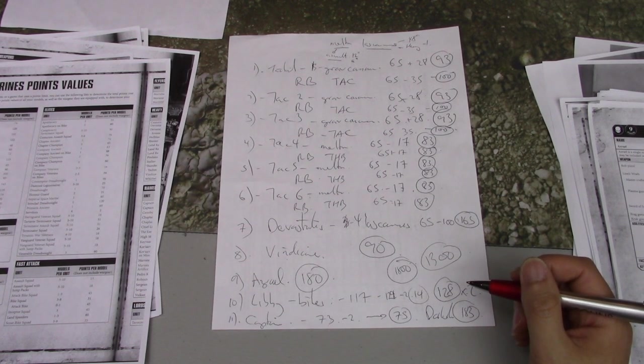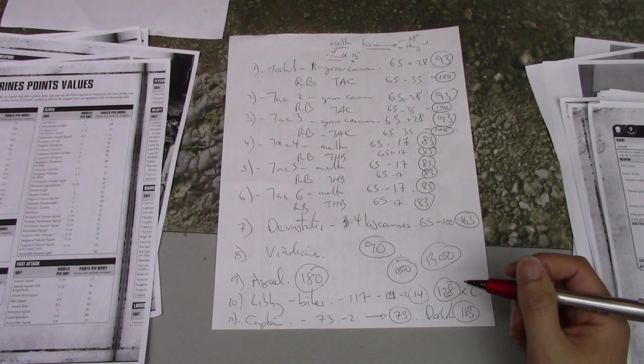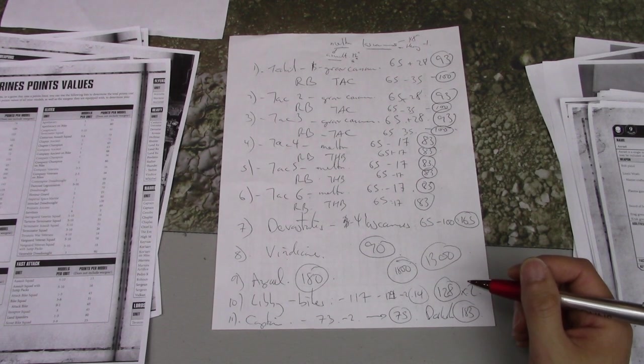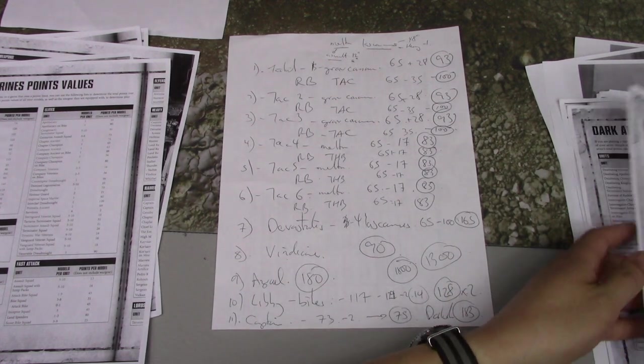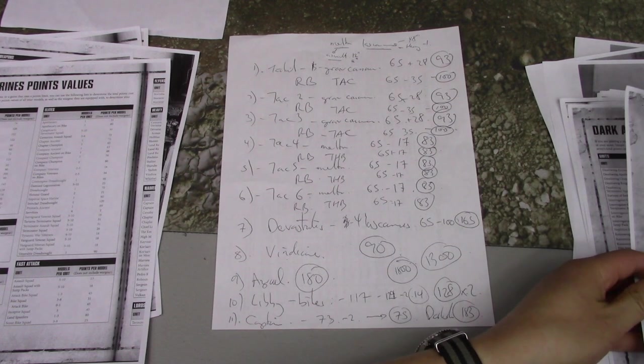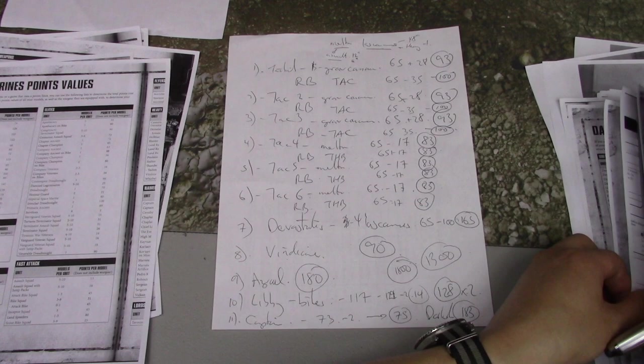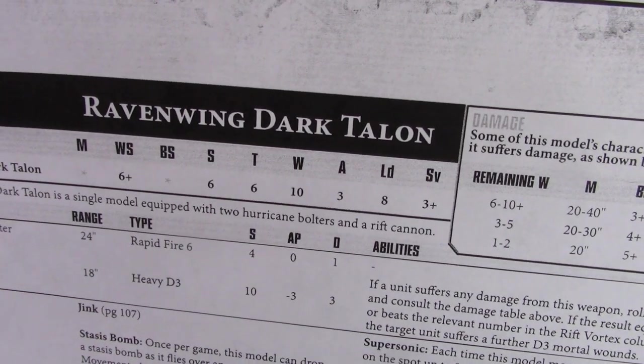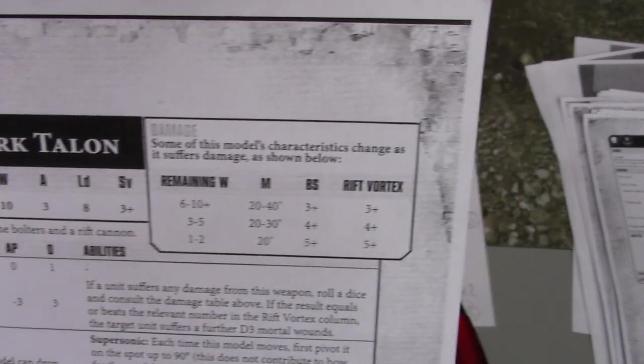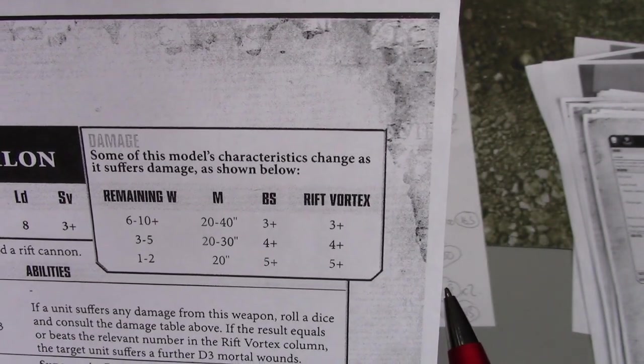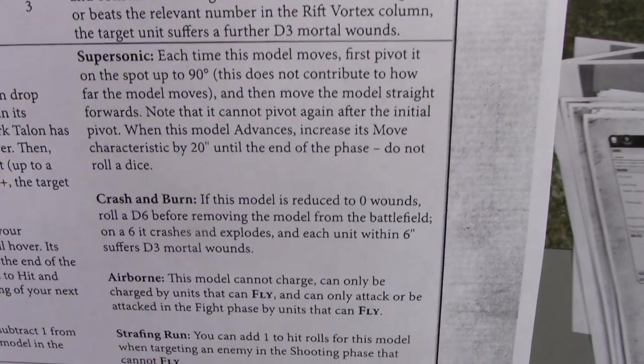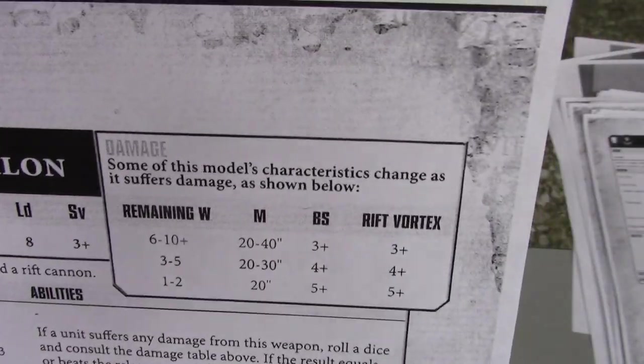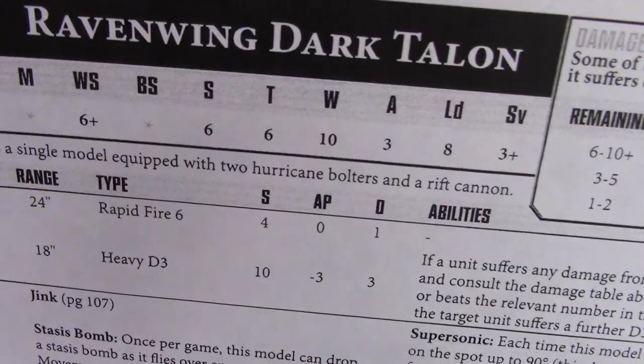The Dark Talon is awesome, I think. It's a flyer, so it's harder to hit. You can't lock it down in combat. And the Rift Cannon is sick and does mortal wounds. The Stasis Bomb also does mortal wounds. So it's one of the few sources other than Smite - actually the only source that Dark Angels have other than Smite of doing mortal wounds. So I might still sub that in at the last minute. But a 6 inch minus 1 to hit bubble is pretty good. So is a flyer that does mortal wounds. The more I talk to you guys about it, I think I'm going to try that first. So let's sub in the Dark Talon.